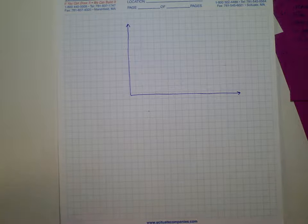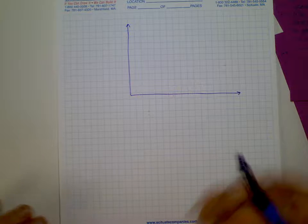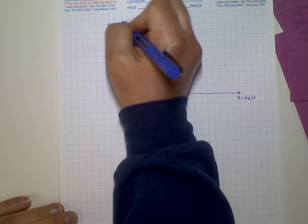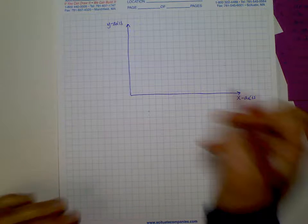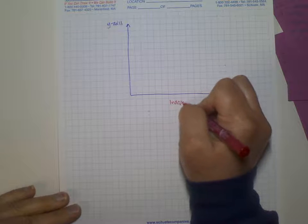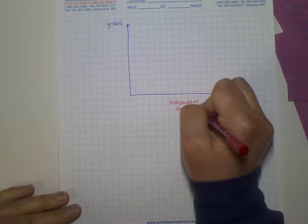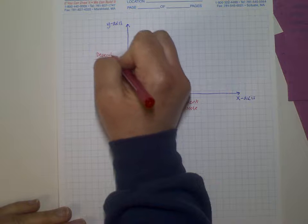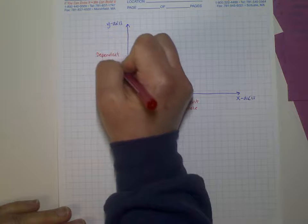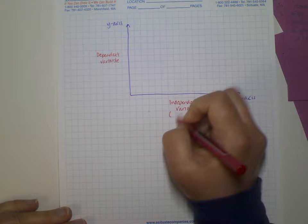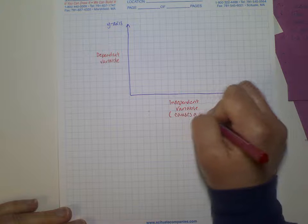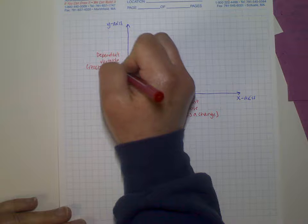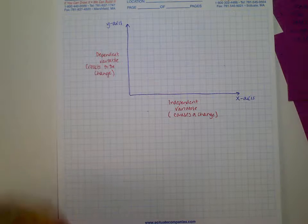In science, a graph is a visual representation of a relationship between two variables. We have an x variable on our x-axis and a y variable on our y-axis. Our x variable is always going to be our independent variable — what causes a change, or what you change. The y variable is our dependent variable, which reacts to the change — it's the resultant of the change.